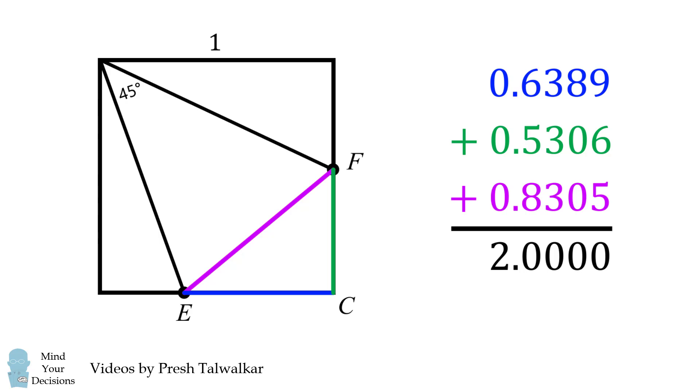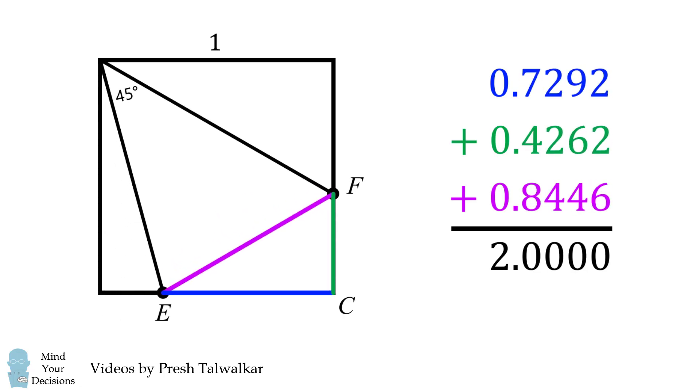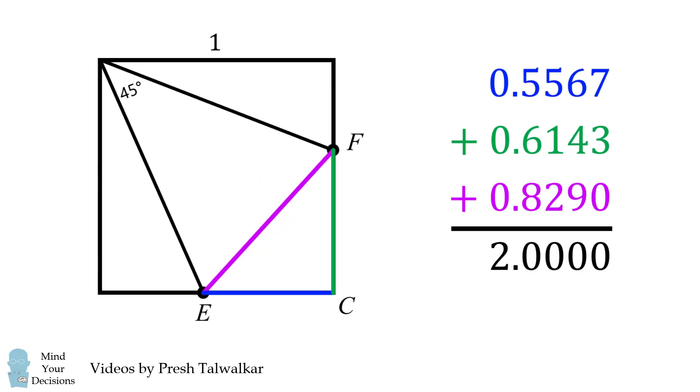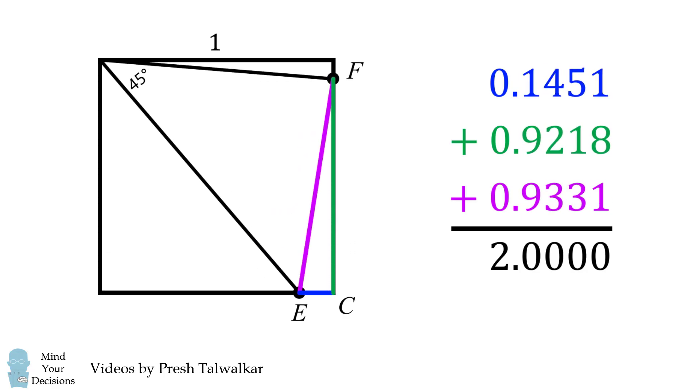Now what would happen if we change the points E and F? A remarkable thing happens. No matter where we pick the points E and F, the perimeter of this triangle will always be equal to 2 exactly. This is good enough for a numerical approach, but why does it happen mathematically?